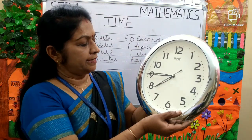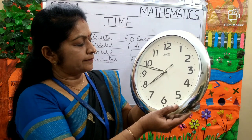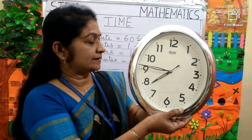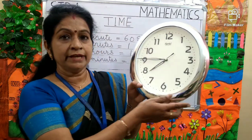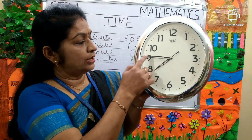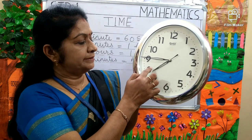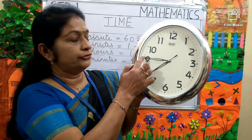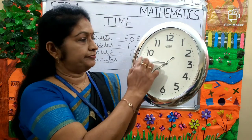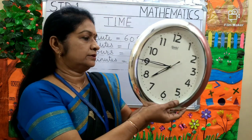Again it has reached on 9. Can you tell me the time? It is 7:45. The hour hand is between 7 and 8. So the time is 7:45, or you can say quarter to 8. 15 minutes left to 8.